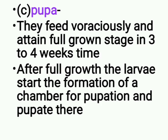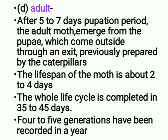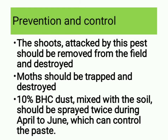Pupa: they feed voraciously and attain full-grown stage in three to four weeks. After full growth, the larvae form a chamber for pupation. Adult: after five to seven days of pupation, the adult moth emerges from the pupae through an exit previously prepared by the caterpillars. The lifespan of the moth is about two to four days. The whole life cycle is completed in 35 to 45 days, and four to five generations have been recorded in a year.